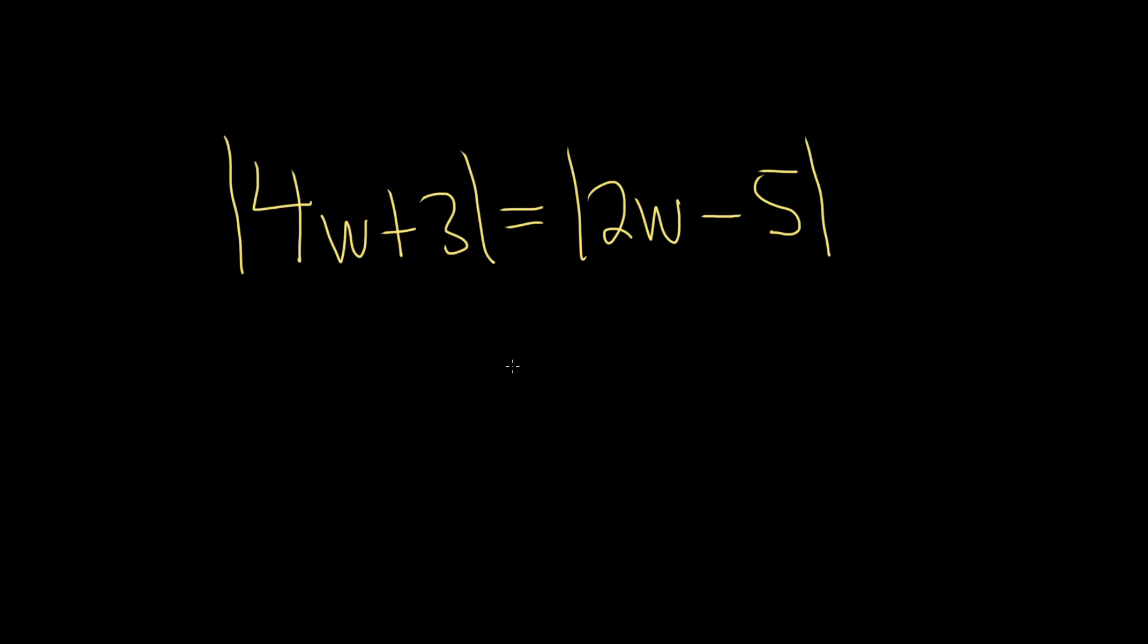In this problem we have an equation with two absolute values. So whenever you have two absolute values, what you do is you drop the absolute values and you put a plus and you put a minus. So let's go ahead and do it.